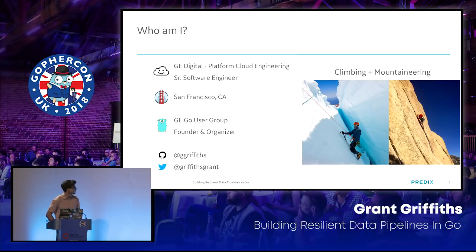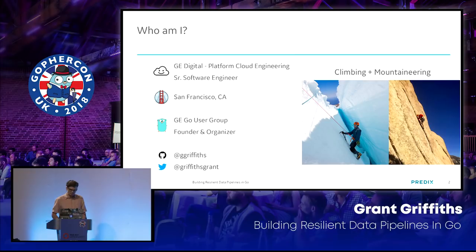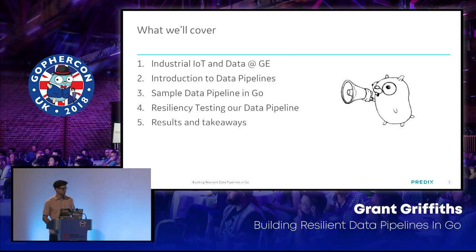A little bit about who I am: I'm a software engineer at GE Digital from San Francisco. I run a Go user group at my company as well. And when I'm not writing or talking about Go, I'm usually outside climbing or mountaineering. So what we'll cover today is a little bit about industrial IoT, the kind of data we're dealing with, and the motivation behind building this data pipeline in Go.